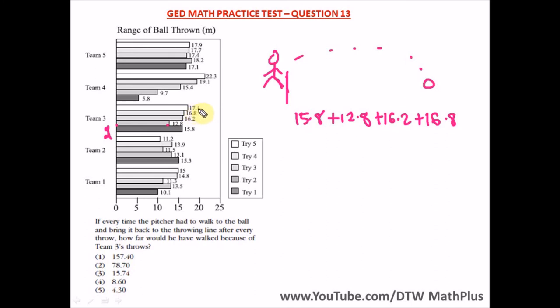Then the last try, try five, which is 17.1. So when he throws the ball he picks it up, so we have to add up all the lengths, because this is in meters, the range of the ball is in meters.